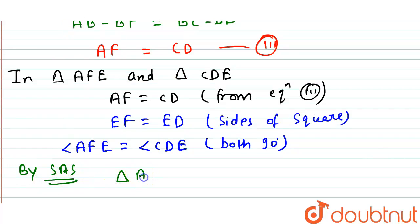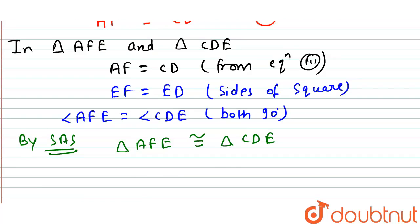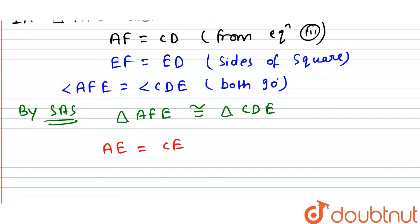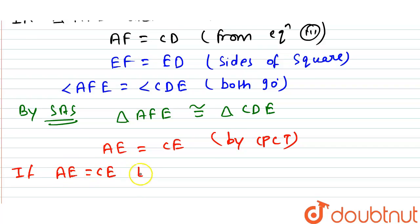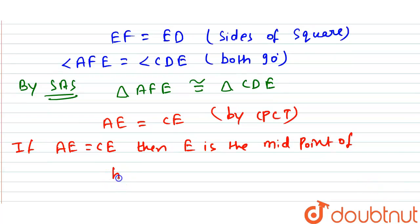Since triangle AFE is congruent to triangle CDE, we get AE equals EC by CPCT. Therefore E is the midpoint of the hypotenuse, which is what we had to prove.